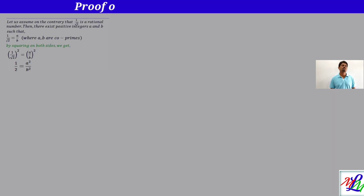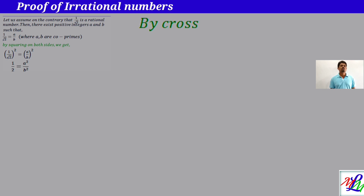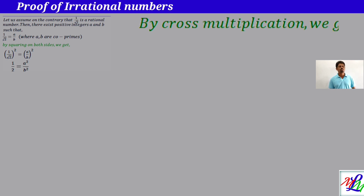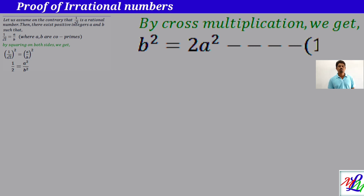By cross multiplication, we get 1 into b square is equal to 2 into a square, that is b square is equal to 2a square. Let this be equation number 1. So here b square is a multiple of 2, meaning 2 divides b square.